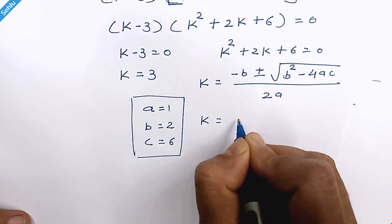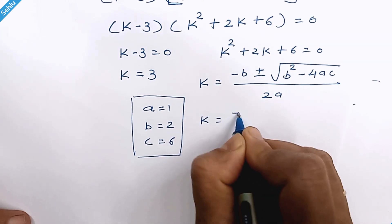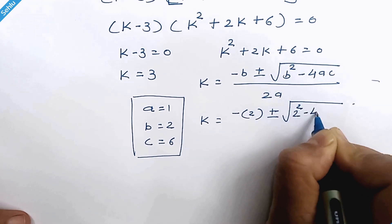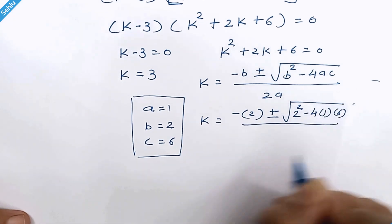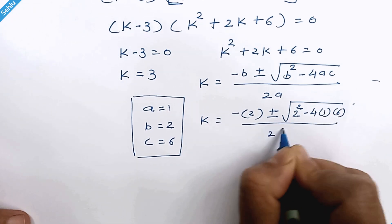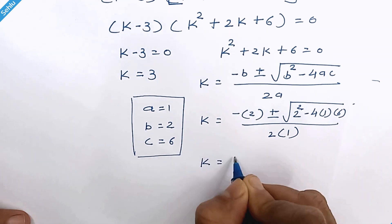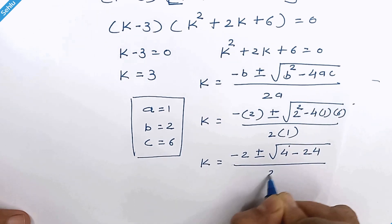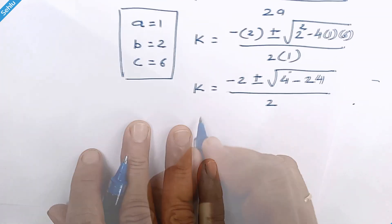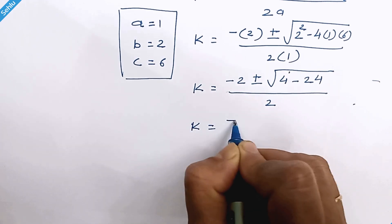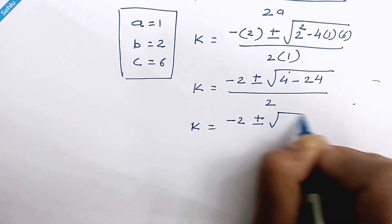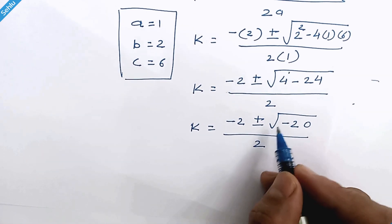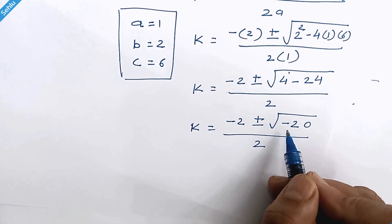Putting these values in, we have minus 2 plus or minus square root of 2 square minus 4 times 1 times 6 over 2 times 1. So k equals minus 2 plus or minus square root of minus 20 over 2. The discriminant is negative, so the result will not be a real number. We will discontinue this part.